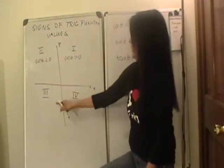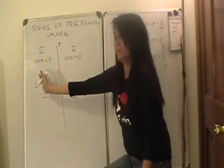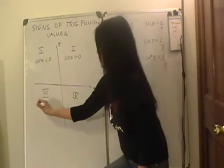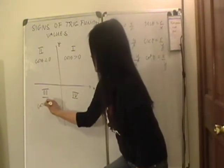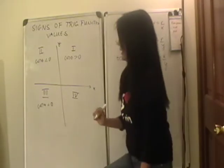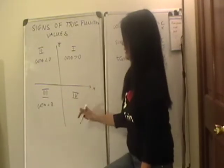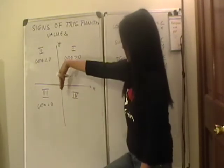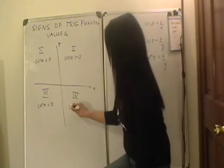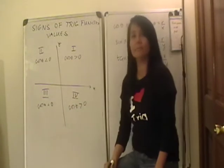In the third quadrant, likewise, it's on the same side, so cosine theta is also going to be negative. And in the fourth quadrant, since this is on the right side, cosine theta is going to be positive.